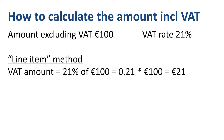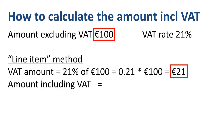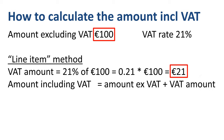Now we have two numbers to add up: the amount excluding VAT of 100 euros, plus the VAT amount of 21 euros. The sum — the amount including VAT — is 121 euros.